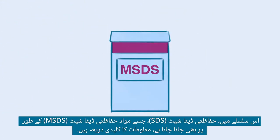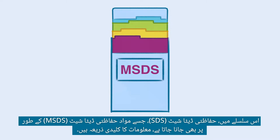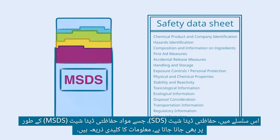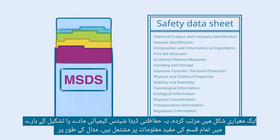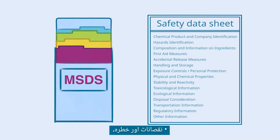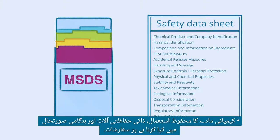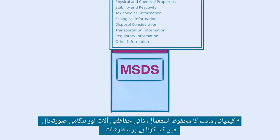In this regard, Safety Data Sheets, also known as Materials Safety Data Sheets, are the key source of information. Compiled in a standardized format, these Safety Data Sheets contain all kinds of helpful information about the chemical substance or formulation — for example, the hazards and risk, recommendations on the safe use of chemicals, personal protective equipment, and what to do in an emergency.